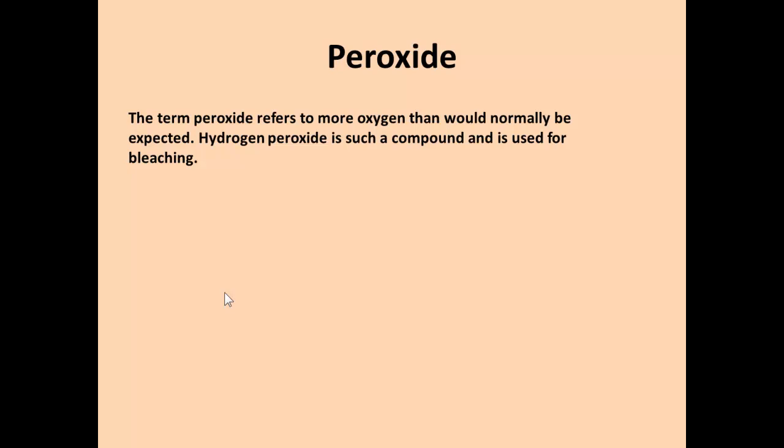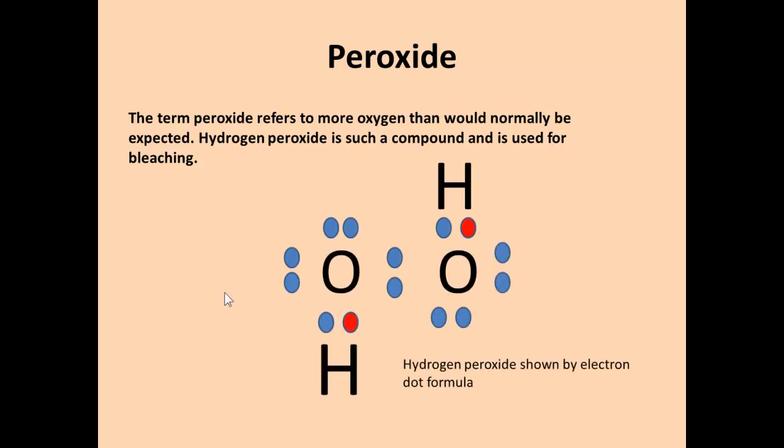You may also have heard the term peroxide. Peroxides are when you've got more oxygen than would normally be expected. Hydrogen peroxide used to be used for bleaching. Two oxygens share electrons, and hydrogen also shares an electron with the oxygen. So that's the formula H2O2.